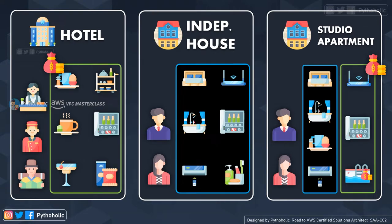Now let's check the third model, that is the studio apartment model. Here you have a shared space with two or three rooms in the same apartment. You have your own room, your own bed, your washroom. But the Wi-Fi, the food, and the pool that you have is shared. And you need to pay for the shared features. So in this model, you're paying for some of the resources that you virtually own, that are not being accessed by others, and you also share some of the resources with someone else — that is your flatmate. But you have the option to choose the shared services you want. So it's also a pay-as-you-go basis, but you have some resources that are shared as well. This being the combination of both the hotel and an independent house, more or less.